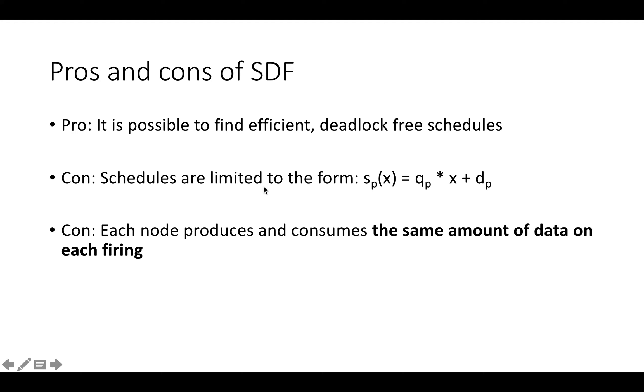The con is that schedules have a very limited form, so every schedule can only have one variable. So the schedule function for P is SP of X fires at time QP, which you could call the firing rate, times X plus DP, where D is the delay.